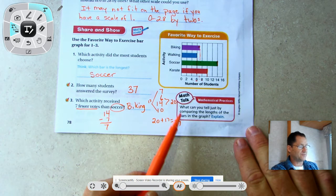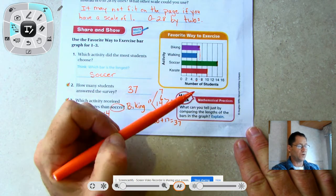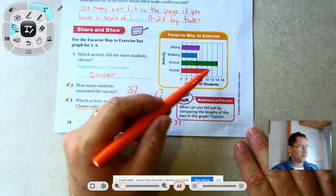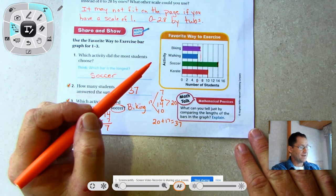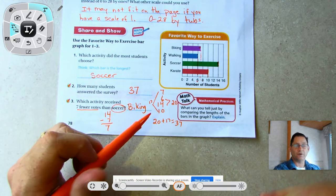The Math Talk says what can you tell just by comparing the lengths of the bars in the graph? I can tell which one was the least favorite - walking. I can tell which one was the favorite - soccer. Basically just by looking at the lengths you can tell the order of which activities were their favorites.